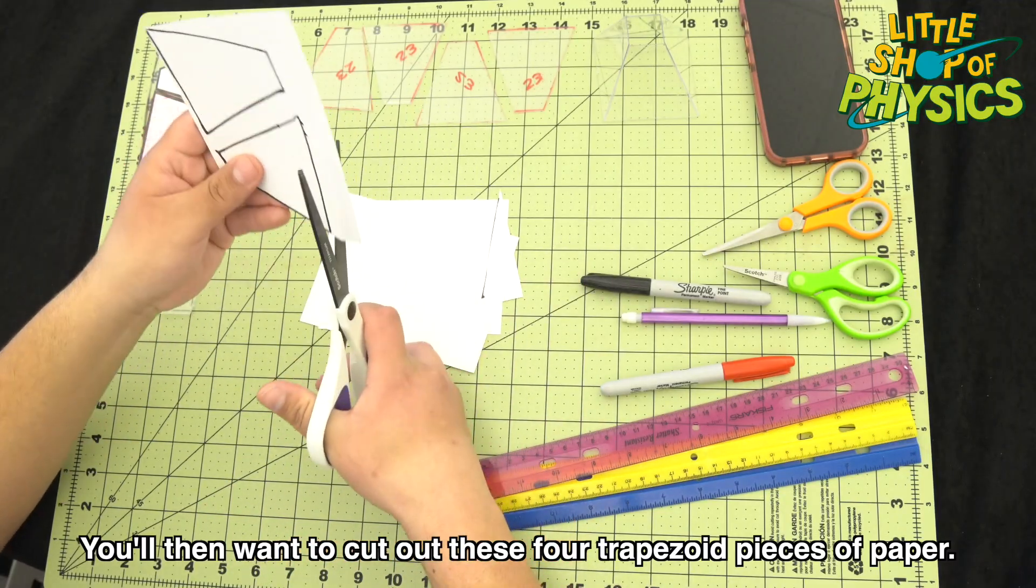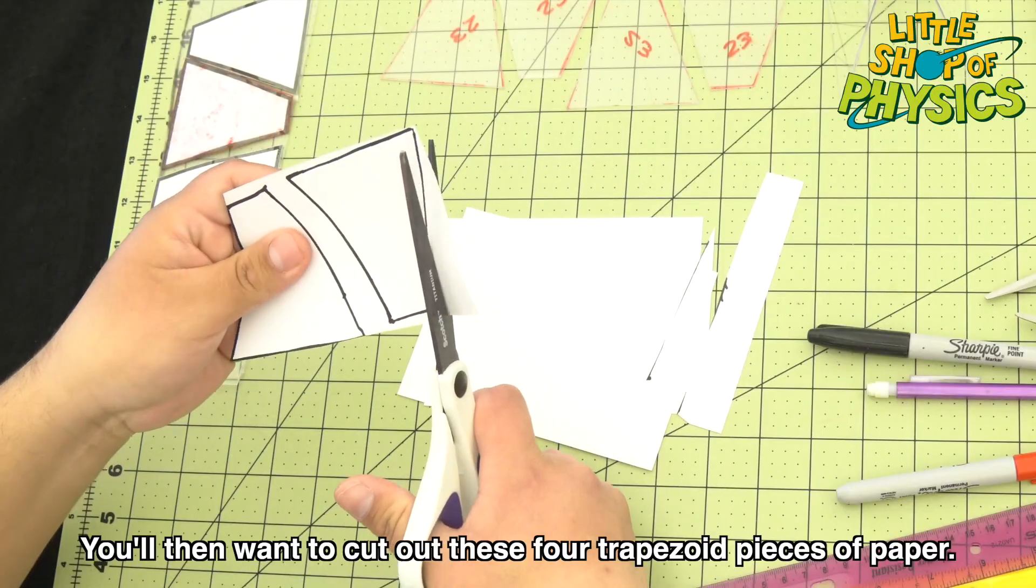You'll then want to cut out these four trapezoid pieces of paper.